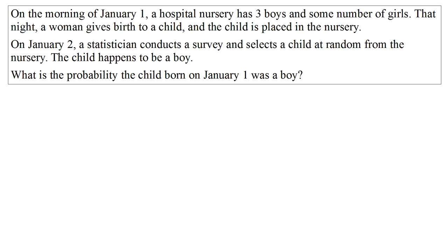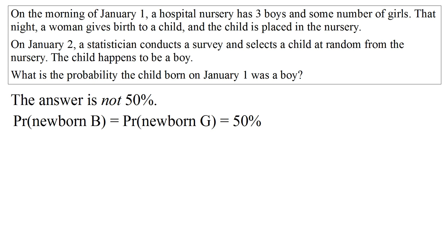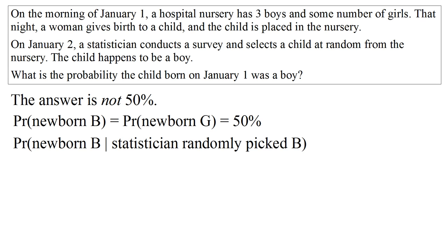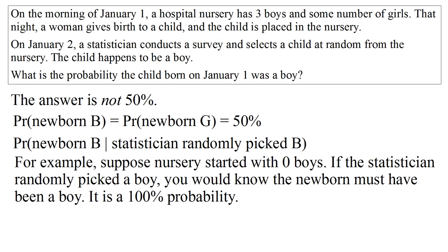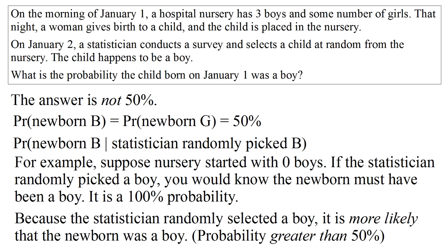I'll get started with a common misconception. The answer is not 50%. While it is true that there is an equal 50% chance that the newborn child is a boy or a girl, that is not the probability you're looking for. The question is asking for the probability of a newborn boy given that the statistician randomly picked a boy. Imagine the nursery started with zero boys. If the statistician randomly picked a boy, you would know the newborn must have been a boy — that would be a 100% probability. In general, because the statistician randomly selected a boy, it is more likely that the newborn child was a boy. Intuitively, the probability will be greater than 50%.